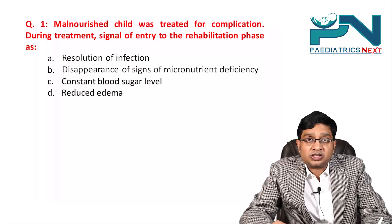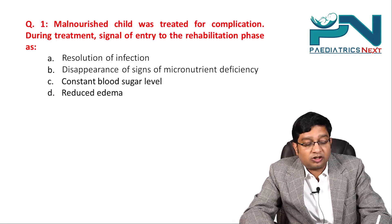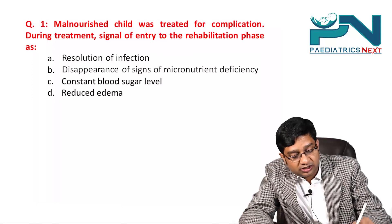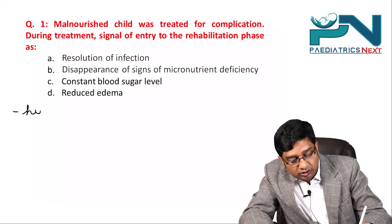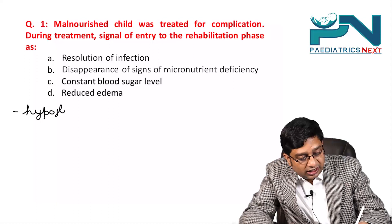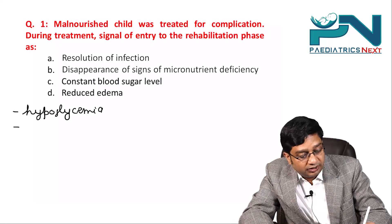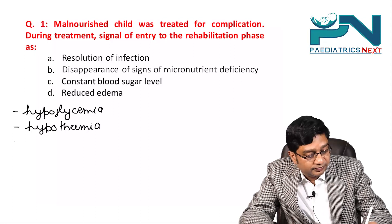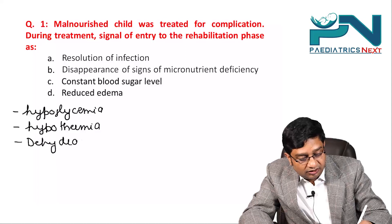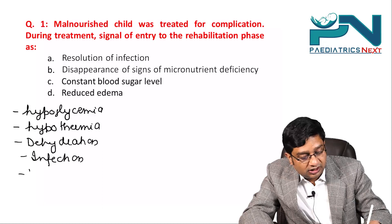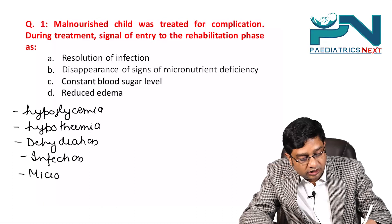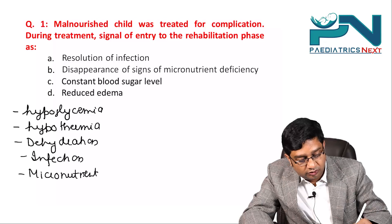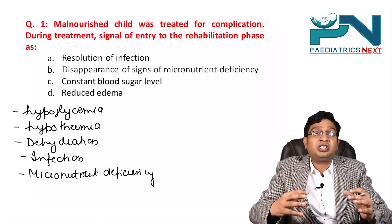First of all, you are treating the complications. The complications in a malnourished child can be basically hypoglycemia, hypothermia, dehydration, infection, and micronutrient deficiency. These are the major complications.